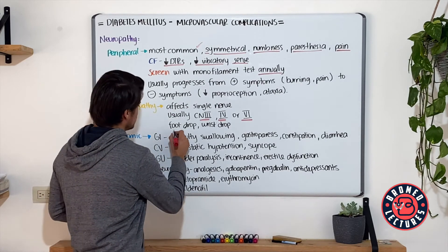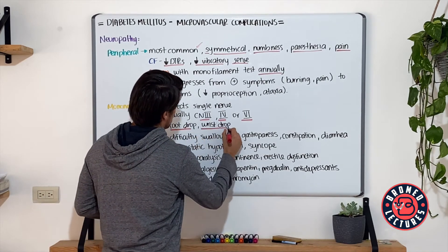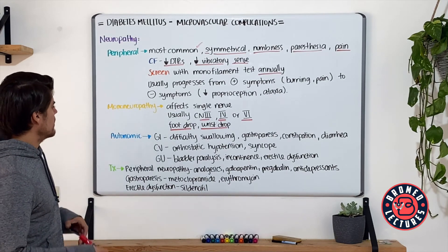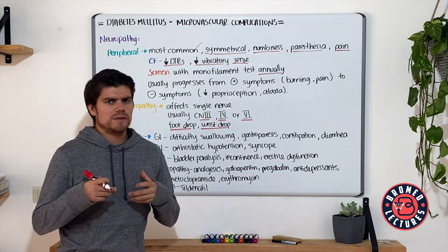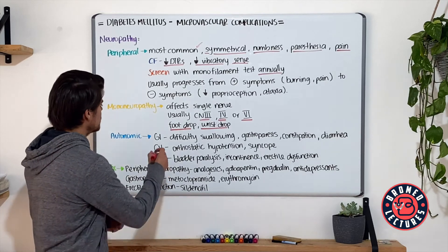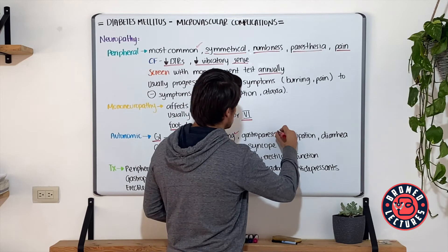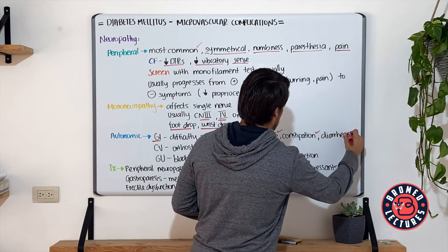Also, patients can develop foot drop or wrist drop. With the autonomic component, it presents with different systems. With the GI tract, we have difficulty swallowing, gastroparesis, constipation, or diarrhea.